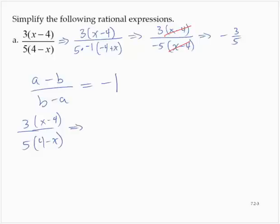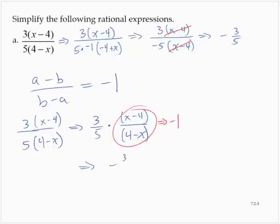What I see from that is I have 3 fifths times x minus 4 over 4 minus x. And that is the same as a negative 1. So I have 3 fifths times negative 1, which is negative 3 fifths.